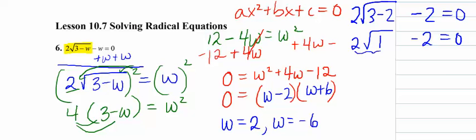2 times the square root of 1, that's like 2 times 1, is 2. And when I subtract, I do get 0. So this is a true answer.